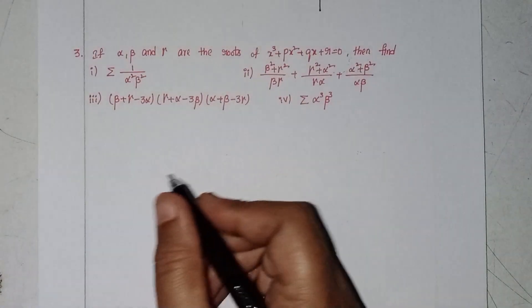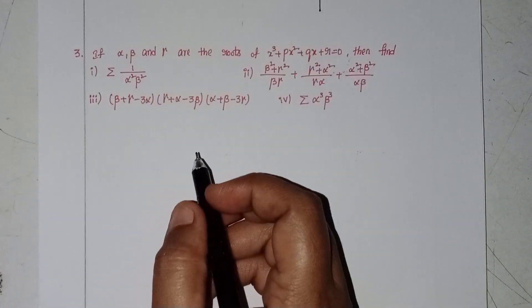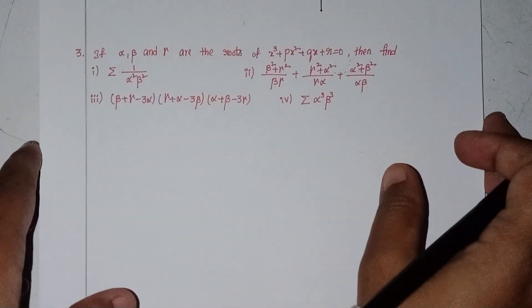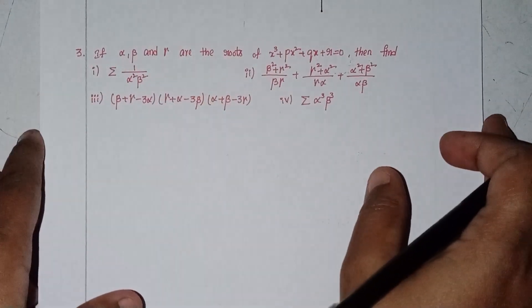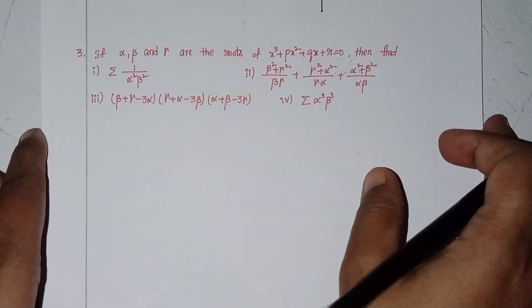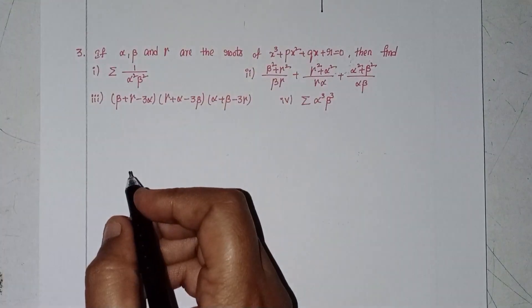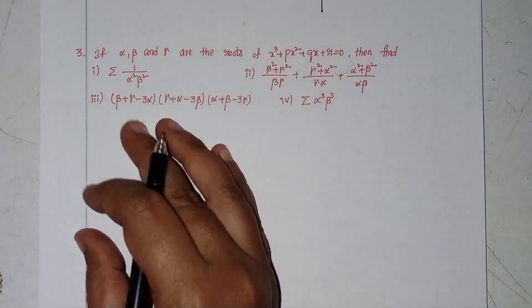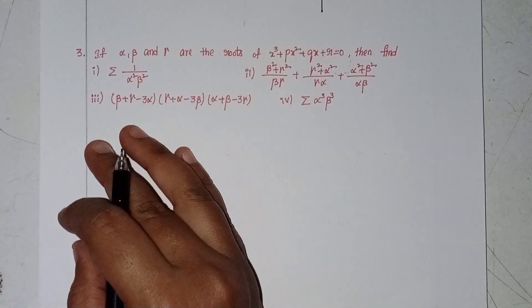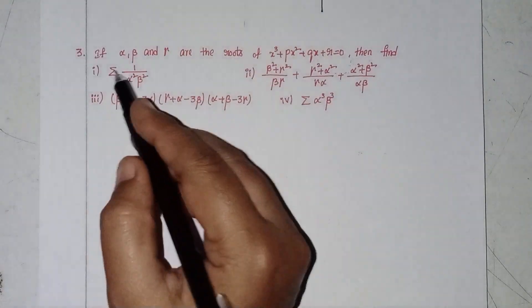Welcome back to our channel. Today we will discuss Intermediate Secondary 2A, Chapter 4, Theory of Equations, Exercise 4A, second Roman, third problem.